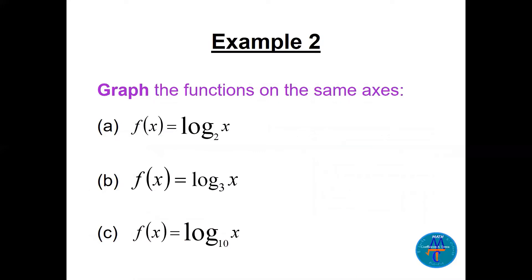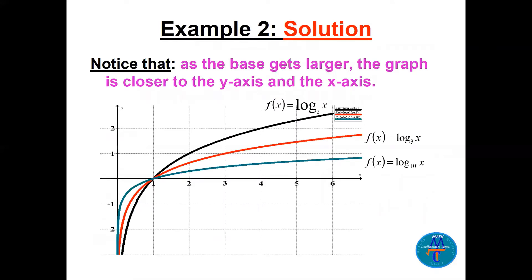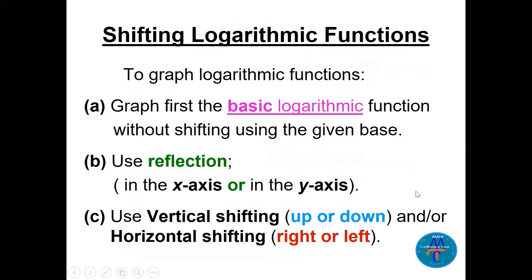Let's graph three functions — log base 2, log base 3, and log base 10 — on the same axis. Log base 10 is the common logarithm; we usually don't write the base 10 explicitly, we just write log of x. As you increase the base, the logarithmic graph gets closer to both the x-axis and the y-axis.